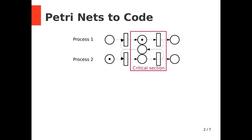If process 2 wants to enter its own critical section, it cannot do so because one of the input places doesn't have any token, so the transition cannot fire.